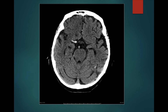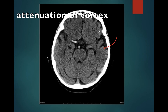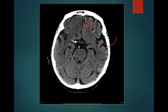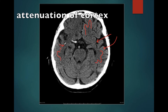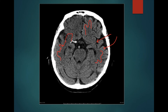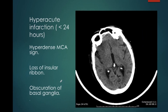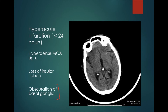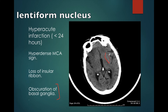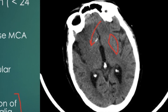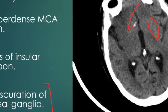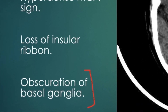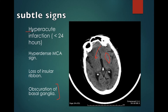We can appreciate the insular ribbon sign in this case as well. Look at the attenuation of the cortex — it is relatively hyperdense compared to the white matter on the left. But on the right side, the attenuation of the cortex is similar to the white matter, and this is the insular ribbon sign, a feature of hyperacute infarction. Another feature of hyperacute infarction is obscuration of the basal ganglia. On the left side, the lentiform nucleus appears lens-shaped, but on the right side we cannot appreciate the lentiform nucleus. This is known as obscuration of the lentiform nucleus or obscuration of the basal ganglia, and is also a feature of hyperacute infarction. These are subtle signs that can be identified only if we keep our focus on them.